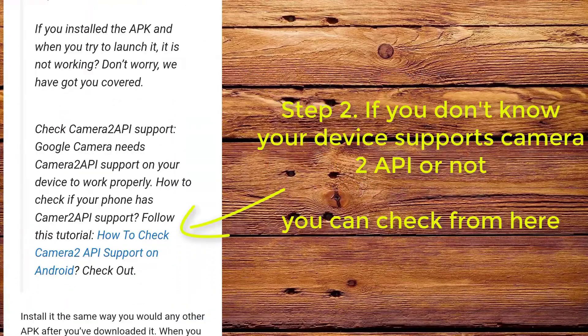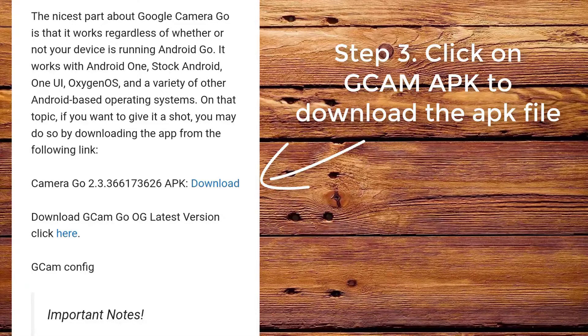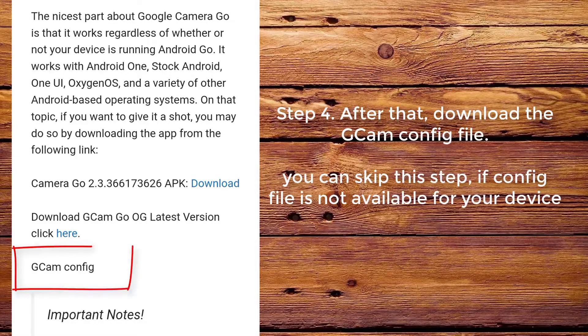Step 2. If you don't know whether your device supports Camera2 API or not, you can check from here. Step 3. Click on CamApp to download the app file.